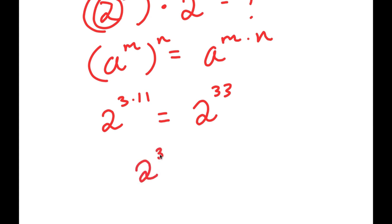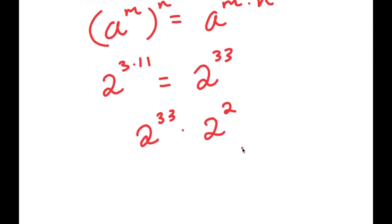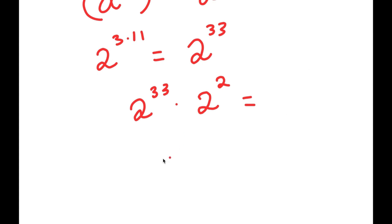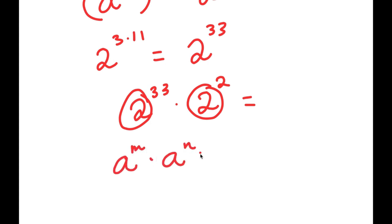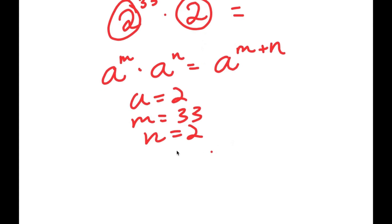So now I have 2 to the power of 33 times 2 squared. The last part is a fairly easy step. Because both bases are the same, if I have something in the form a to the power of m times a to the power of n, this equals a to the power of m plus n. So here I have 2 to the power of 33 times 2 squared — a is 2, m is 33, and n is 2 — so I can rewrite this as 2 to the power of 33 plus 2, which equals 2 to the power of 35.